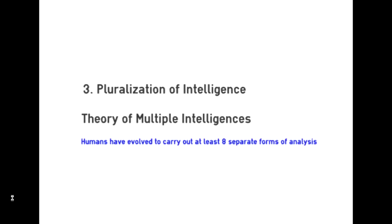After this there's quite a big breakthrough: looking at intelligence as not just one thing. Number three in our list is the pluralization of intelligence — by plural we mean more than one. This is commonly called the theory of multiple intelligences. The idea is that intelligence can't be defined as just one thing, and humans are believed to be able to carry out analysis of the world in at least eight different ways.